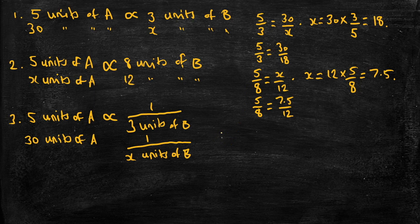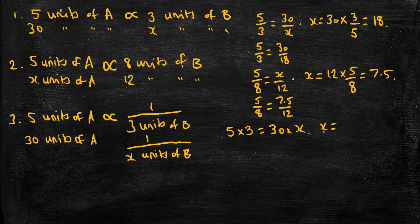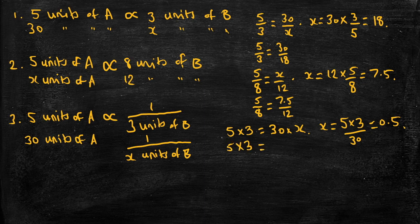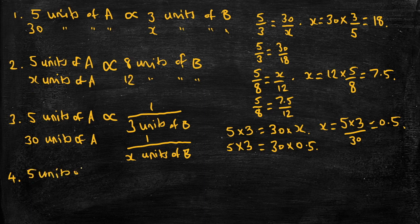This time, instead of setting up fractions equal to one another, we set up products equal to one another. In this case: five times three equals 30 times X. So X is equal to five times three divided by 30, which equals 0.5. We can check by making sure the products are equivalent: five times three is 15, and 30 times 0.5 is 15. So we're all good.